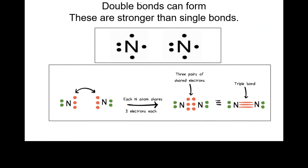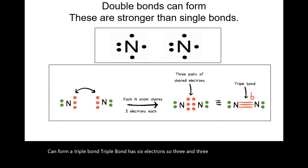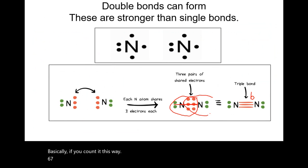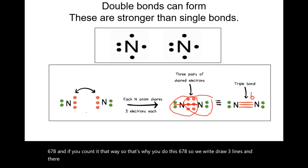Nitrogen can form a triple bond. A triple bond has six electrons — three from each atom for sharing. Counting it: six, seven, eight — so we draw three lines. Triple bonds are stronger than double bonds, and double bonds are stronger than single bonds.